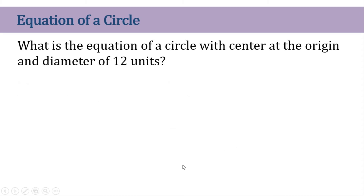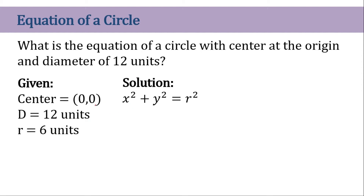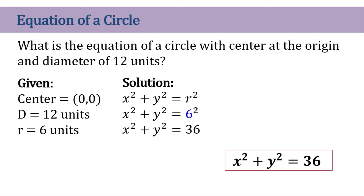Another example: what is the equation of the circle with the center at the origin and a diameter of 12 units? Remember that diameter is twice the radius, so we don't use diameter directly — we need the radius. Half of 12 is 6 units. Using the circle equation for center at origin, all we need to do is substitute 6 for R, and we have our equation for a circle whose center is at the origin and whose radius is 6 units.